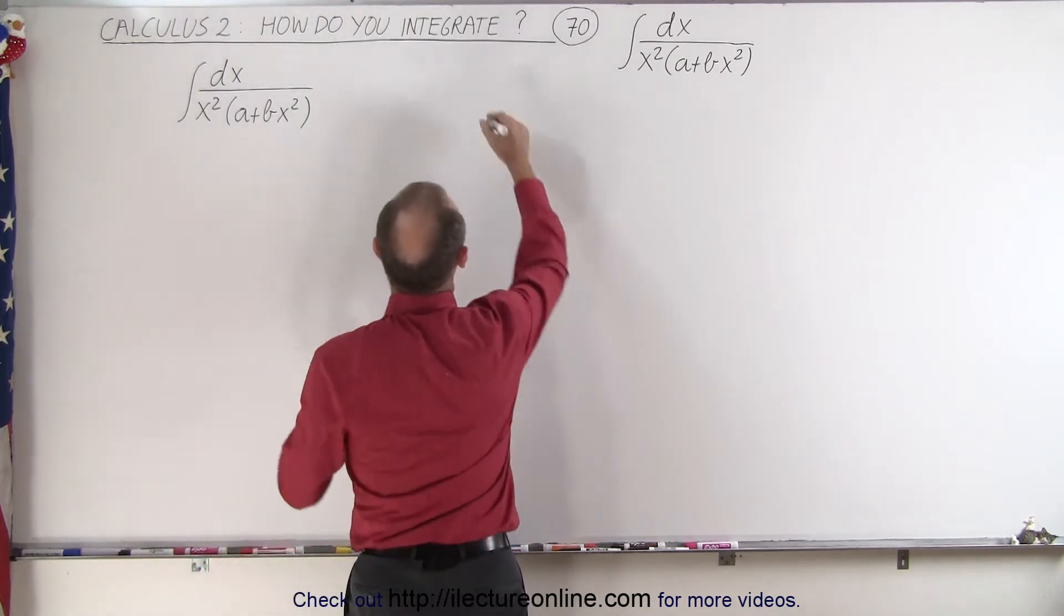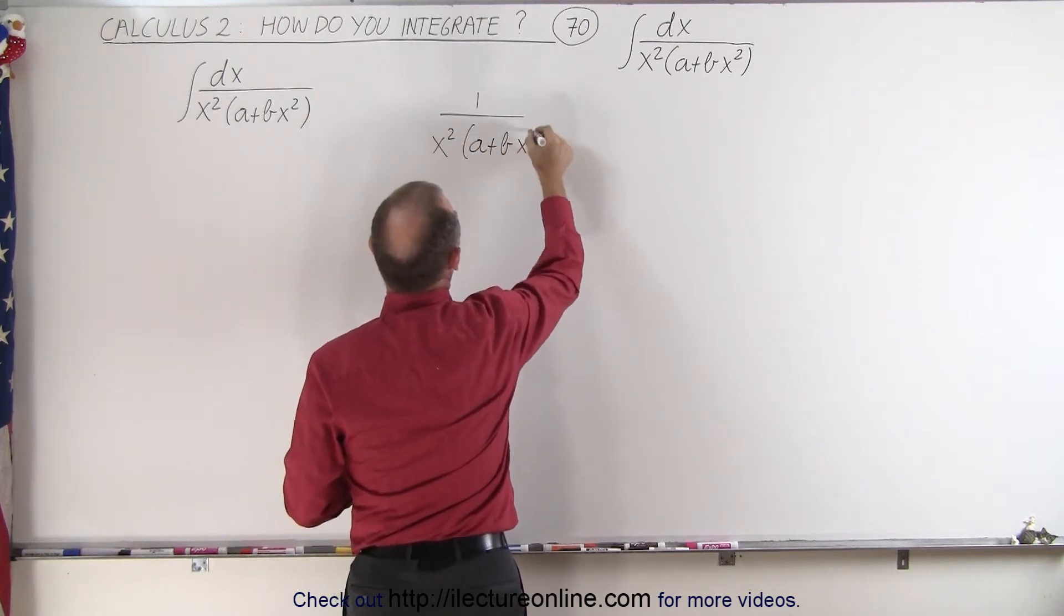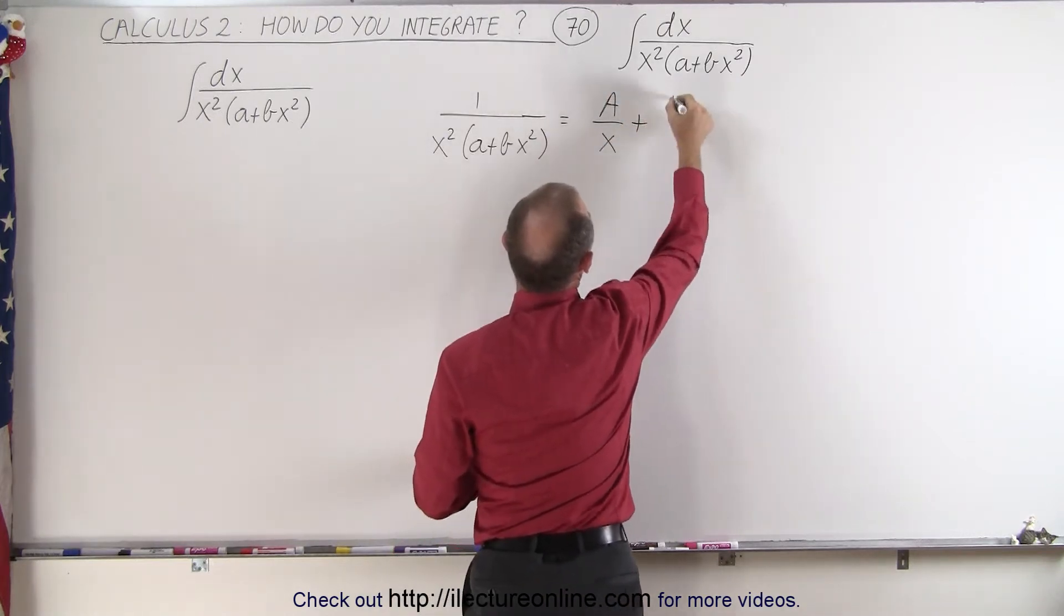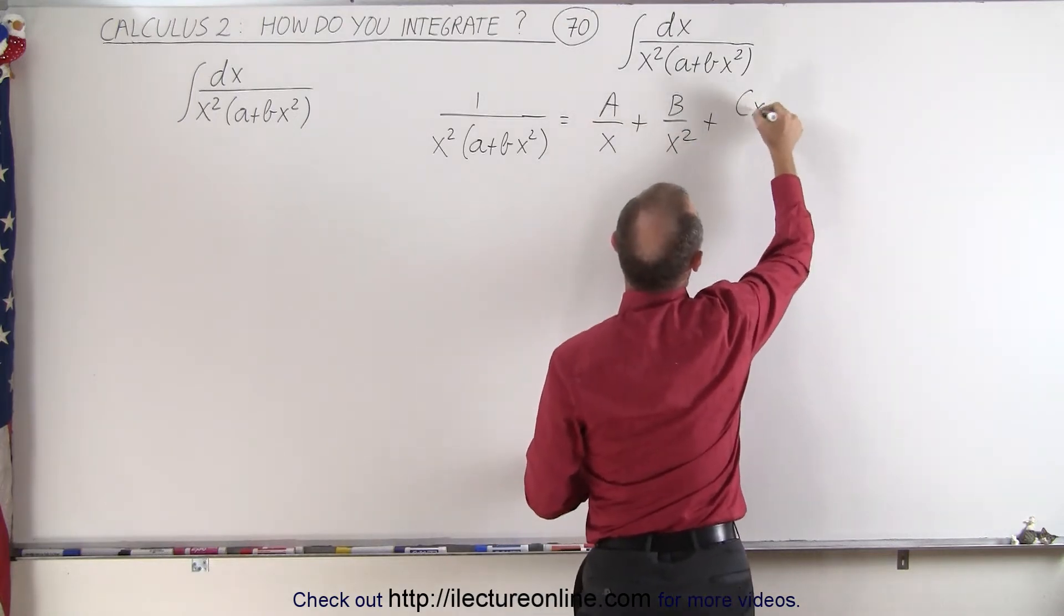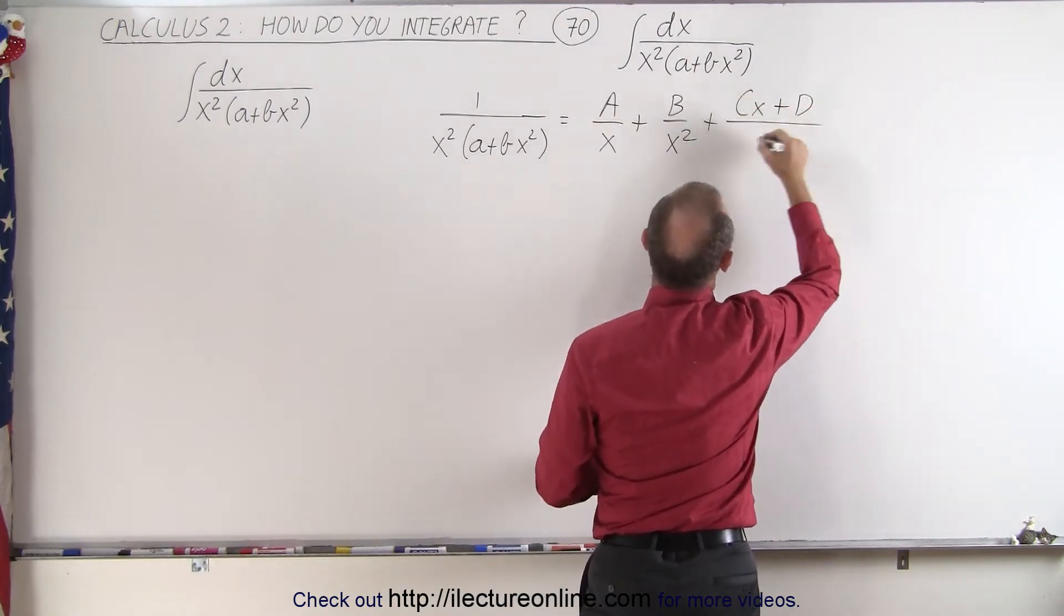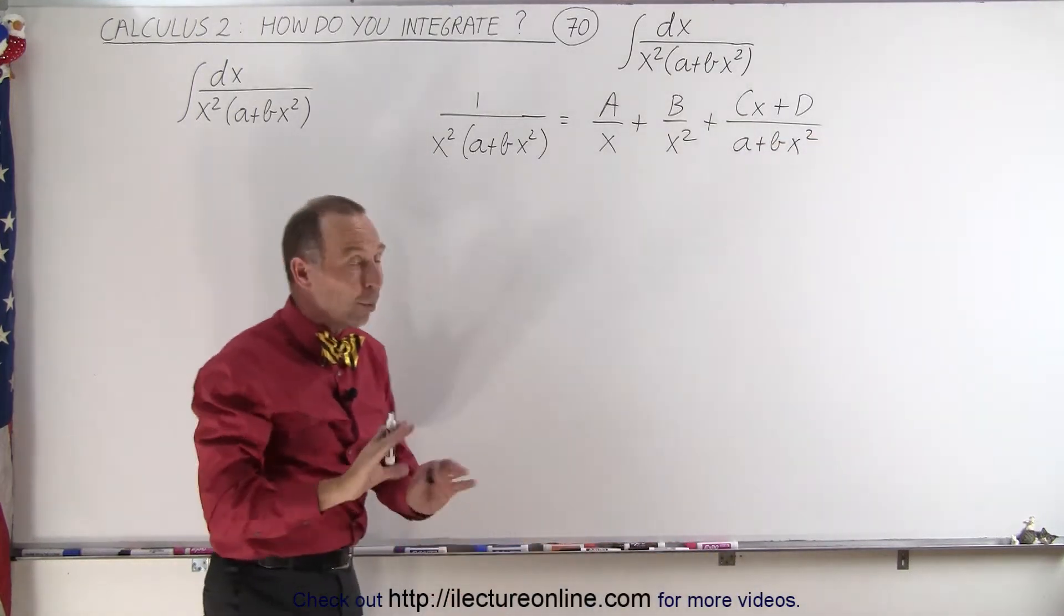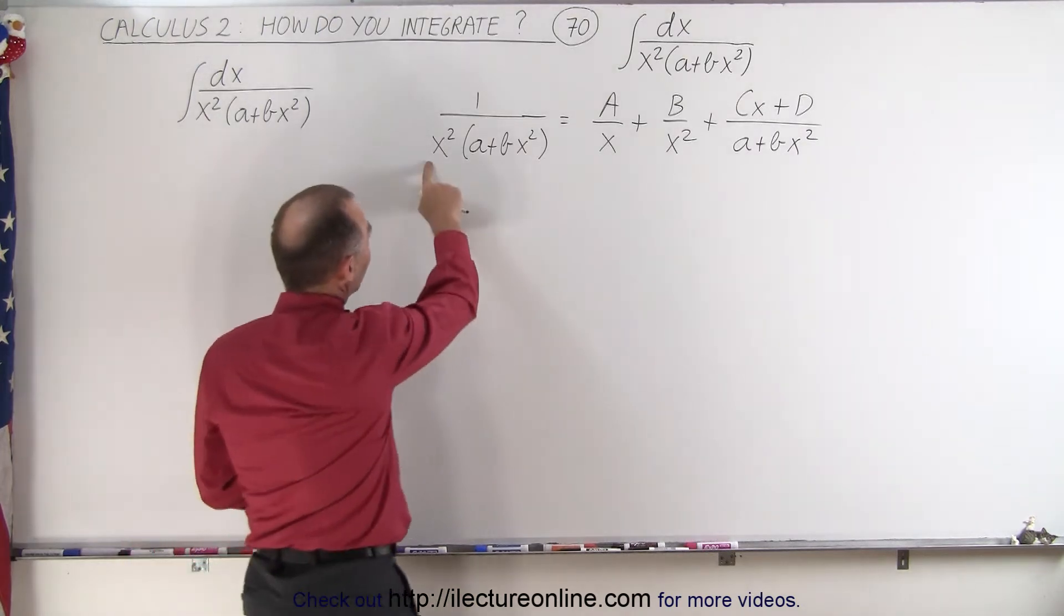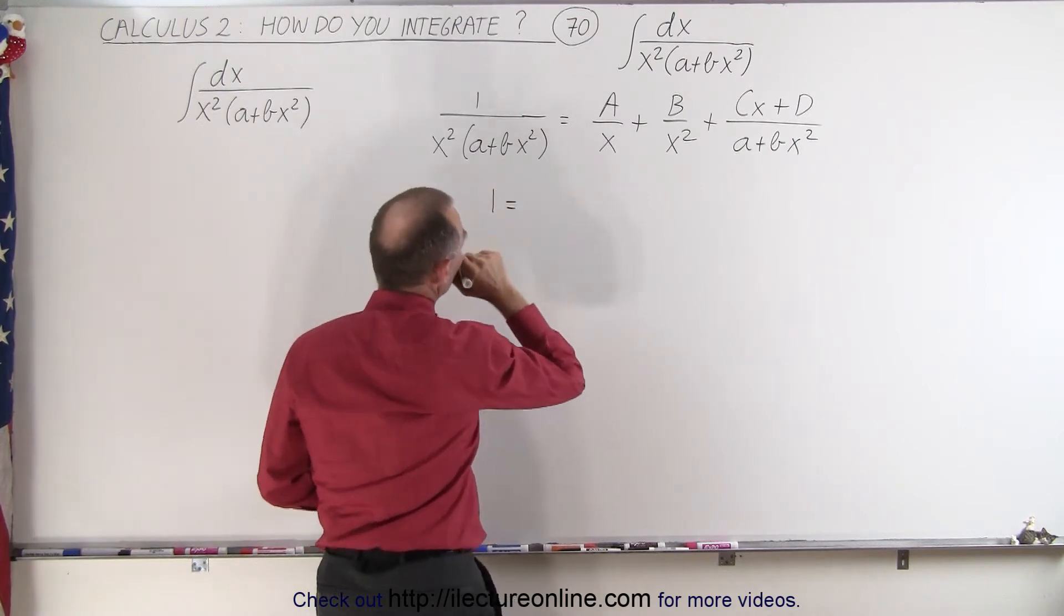That means we can write 1 over x squared times a plus bx squared as A over x plus B over x squared plus Cx plus D over a plus bx squared. And now we're going to multiply both sides of that equation by the common denominator, which of course is x squared times a plus bx squared.